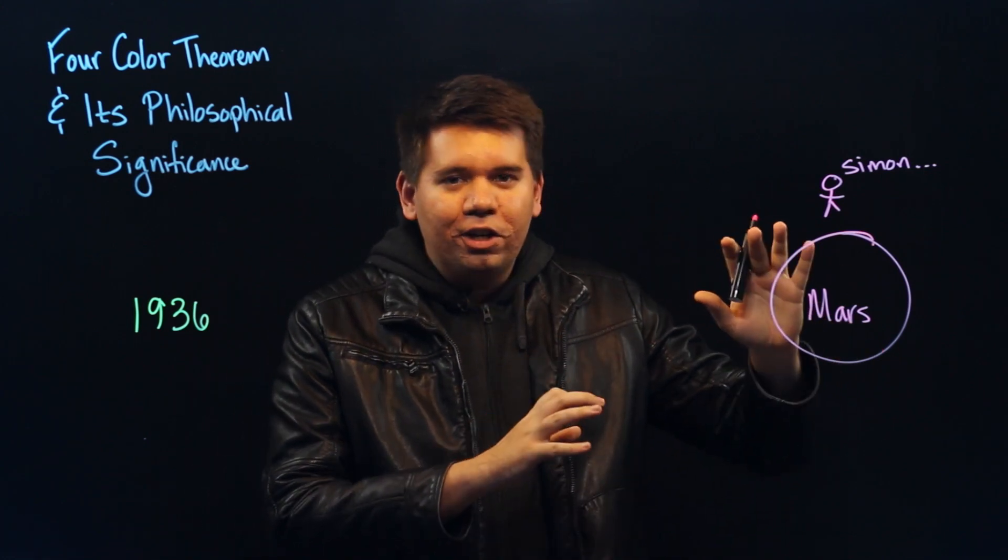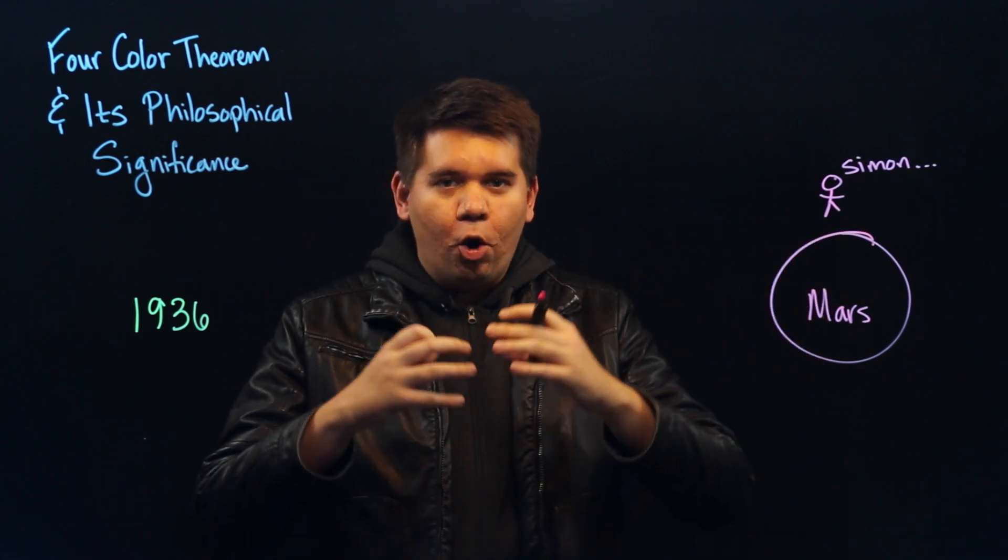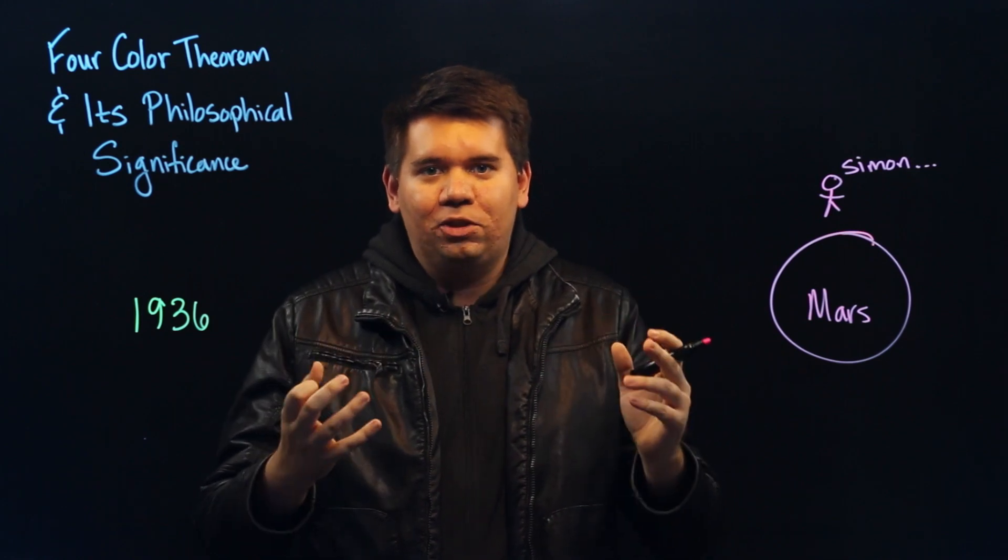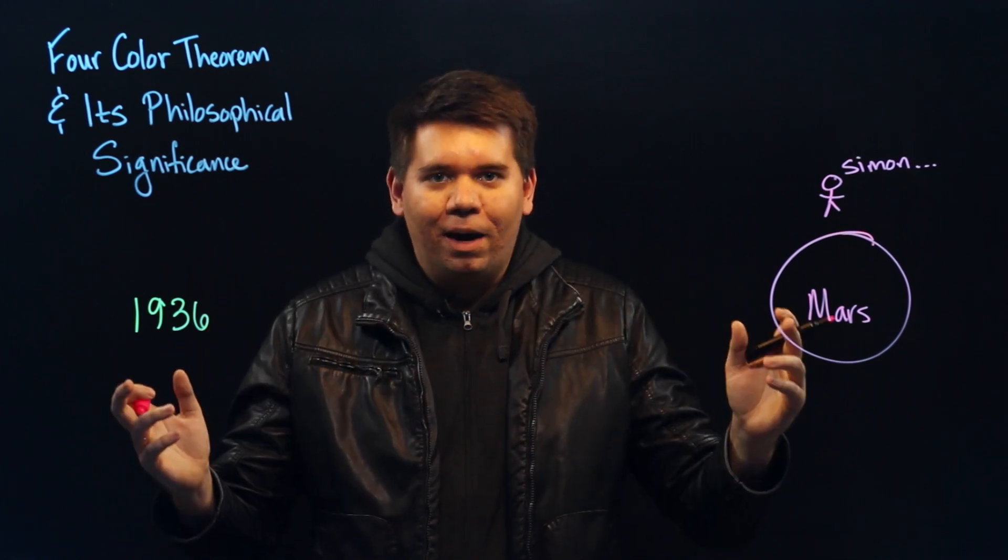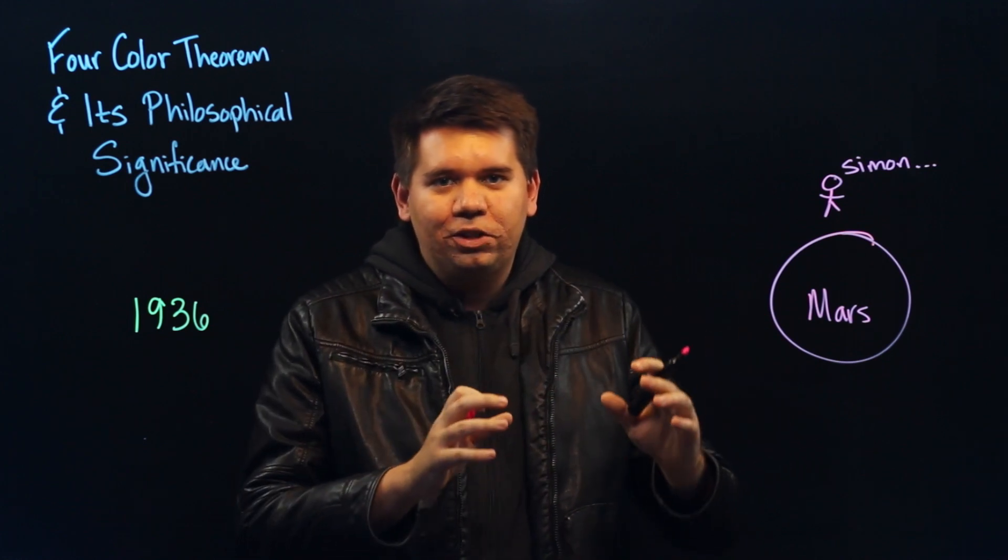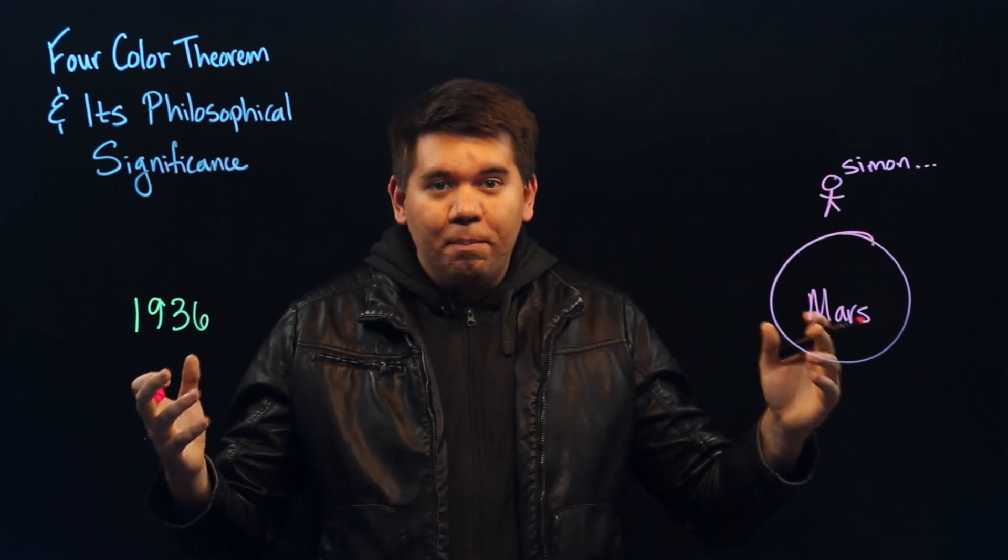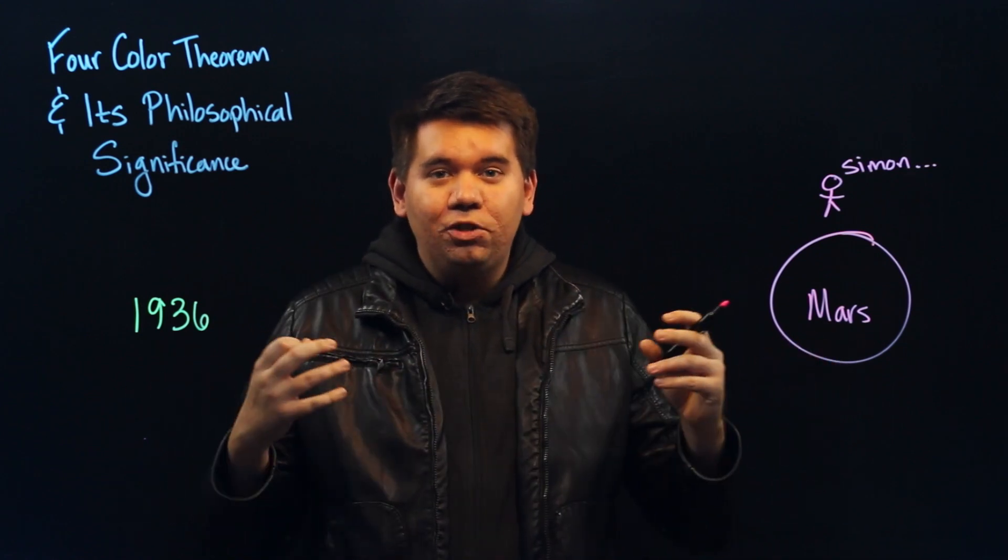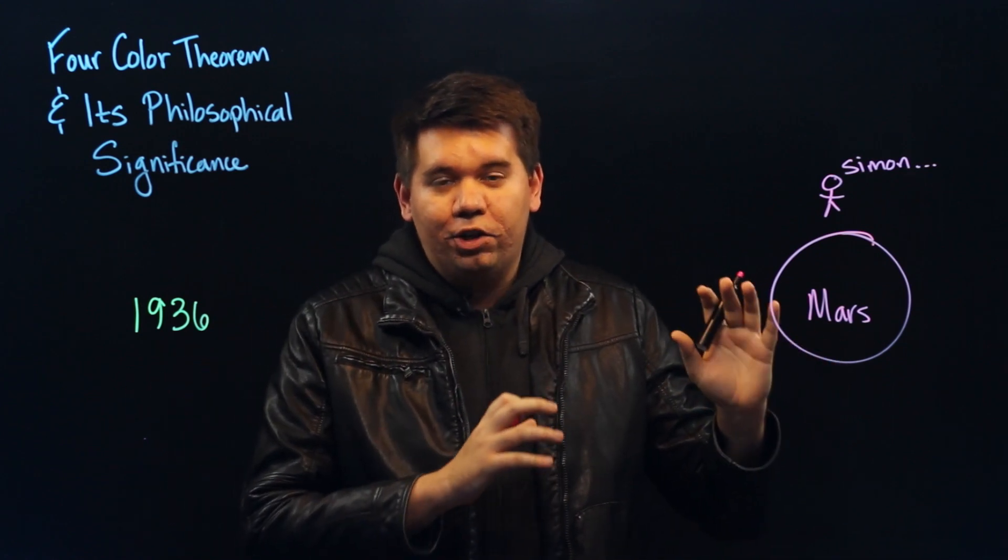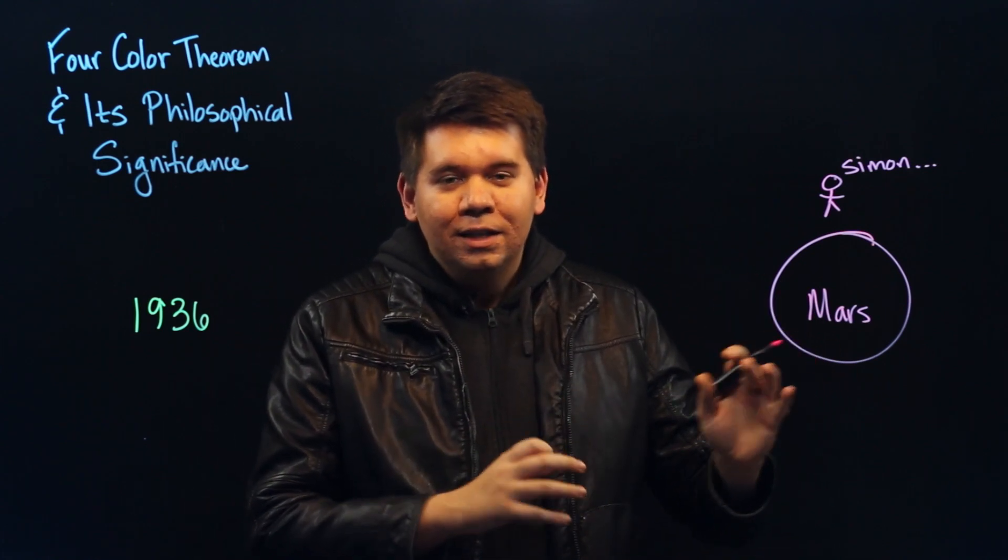But then, the artificial intelligence reports to have solved some open problem that the mathematics community has been unable to solve. Something like the Riemann hypothesis. And so we go and we try and get a printout of how the artificial intelligence did it. But all we can find is that it's so complicated, we can't even begin to understand the approach of the artificial intelligence. Would we accept that result?